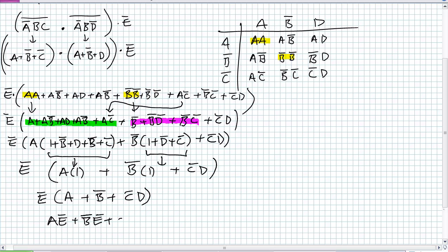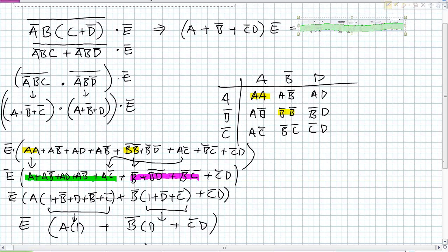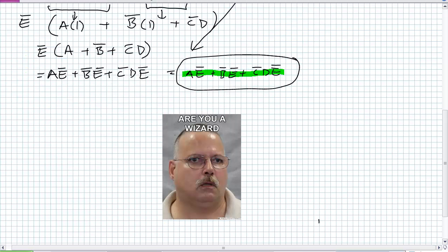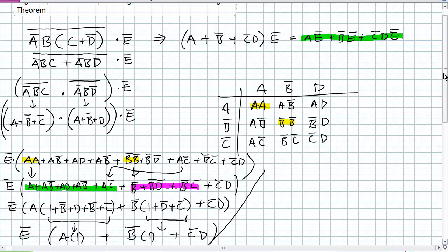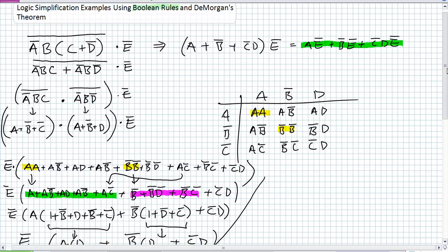Grand unveiling — is this expression equivalent to what we had up here? Let's go ahead and bring it down for comparison. They are in fact equivalent through all that crazy stuff. I'm not going to give you something this complicated on an exam, but it's a great example because it uses all the Boolean laws, and it shows you that regardless of where you apply DeMorgan's, Boolean rules, distribution, or factoring — as long as you're doing it correctly, you're going to come up with the same answer.